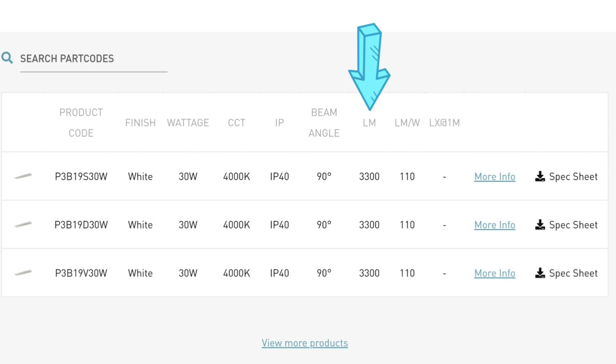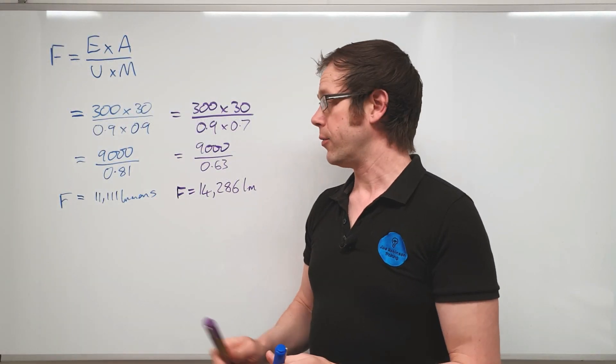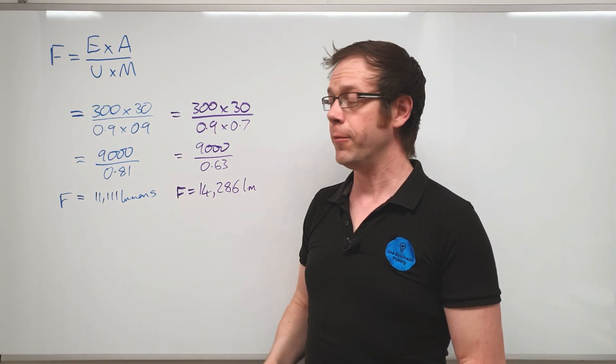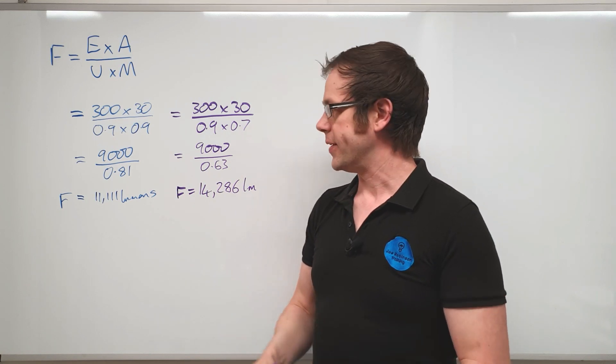In this case there's three lines of fittings here with different control methods for dimming, non-dimming, etc., so they all output the same amount of light. That's found in this column with lm at the top here. So you can see each one of these fittings outputs 3,300 lumens of luminous flux.